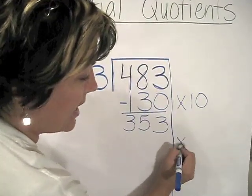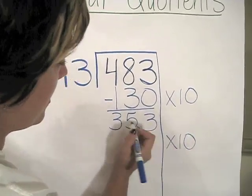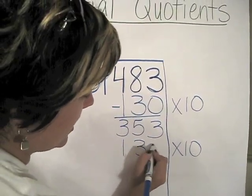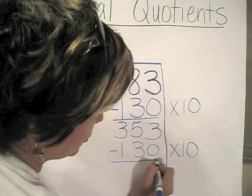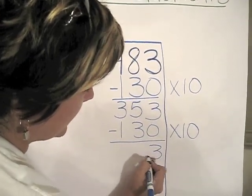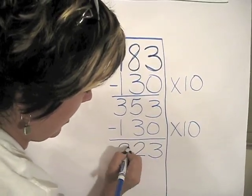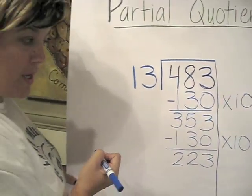I'm going to do times 10 again. That's another 130 that I'm able to put into those 13 groups. When I subtract, I have 223 remaining.